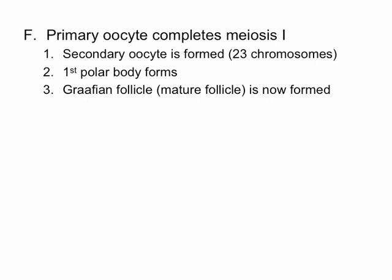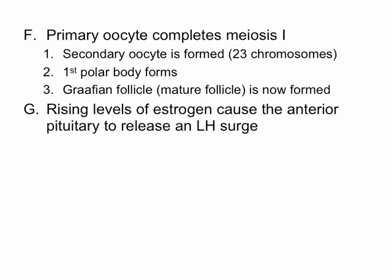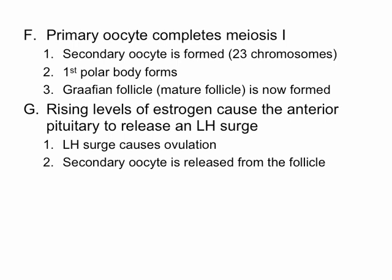At this point, with our secondary follicle, the mature follicle is formed. We've got a secondary oocyte inside — we call this thing a Graafian follicle. Meanwhile, we've got rising levels of estrogen. The rising levels of estrogen cause the anterior pituitary gland to release a surge of luteinizing hormone, or LH. That LH surge causes ovulation, and that secondary oocyte is then released from the follicle and can be swept up by the fimbriae into the fallopian tube.